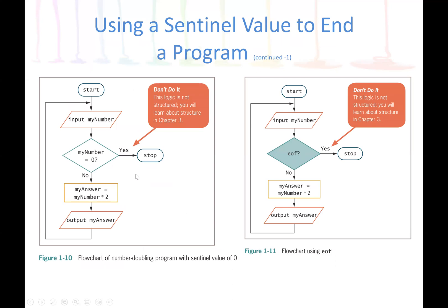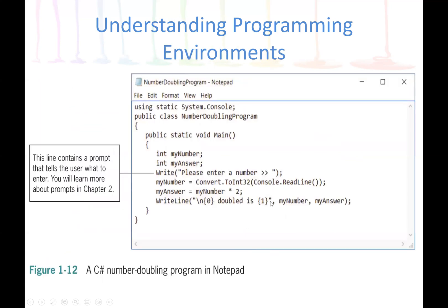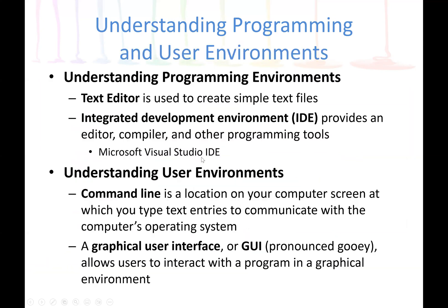In this example, after we finish execution we get input again. If 'myNumber' is equal to zero, we stop; otherwise, we double it. But the best way also gives another option — end of file. We will see that the best way is to have the loop.